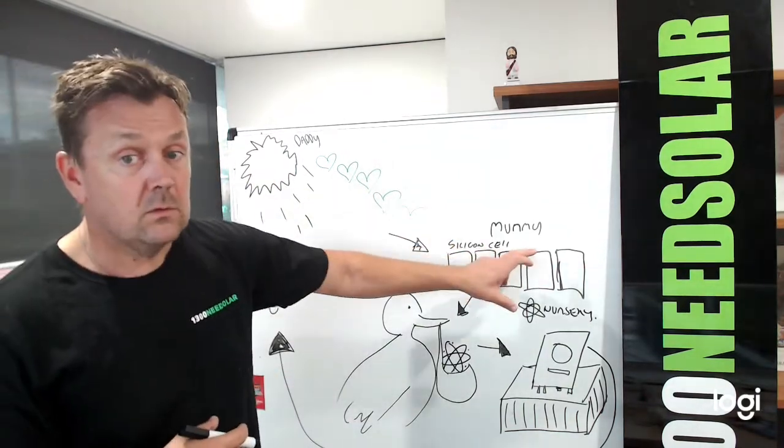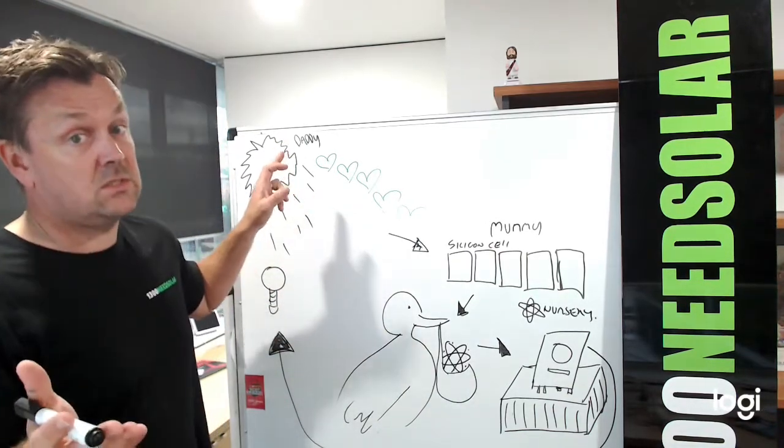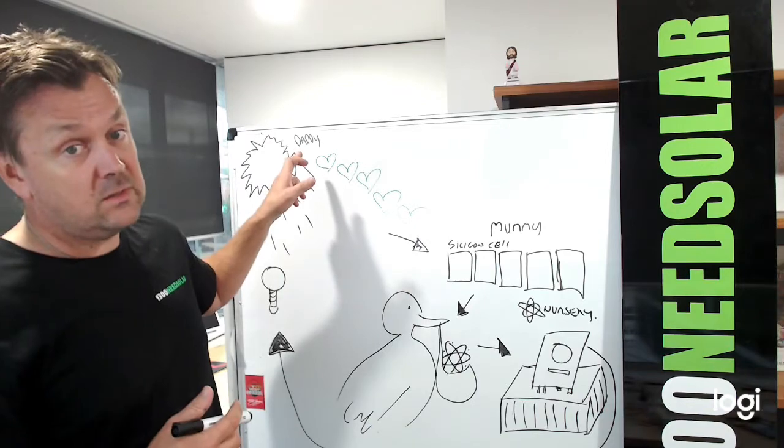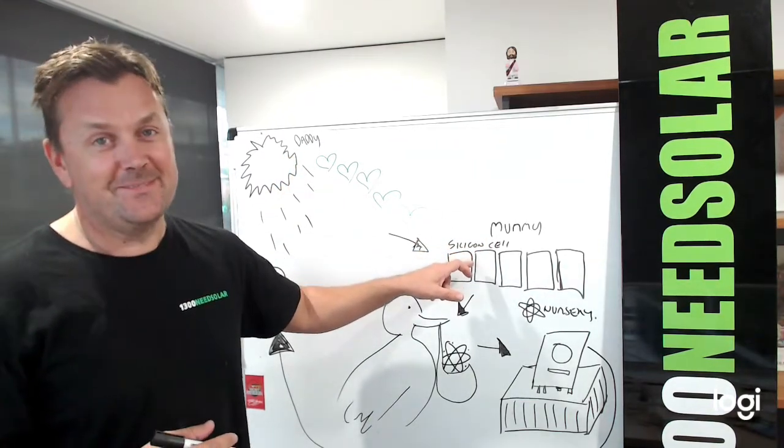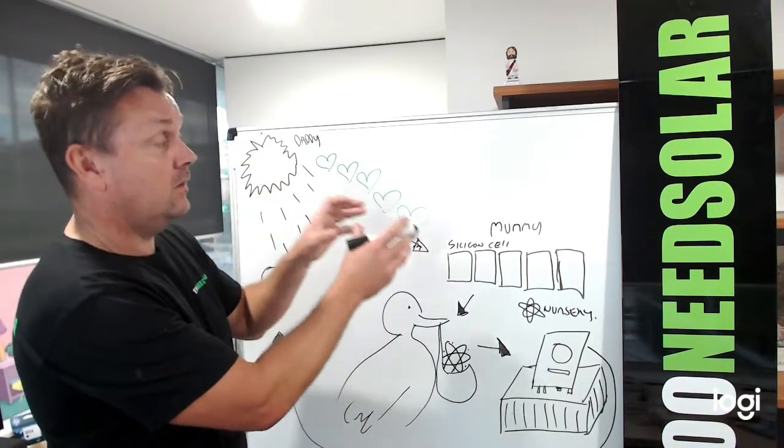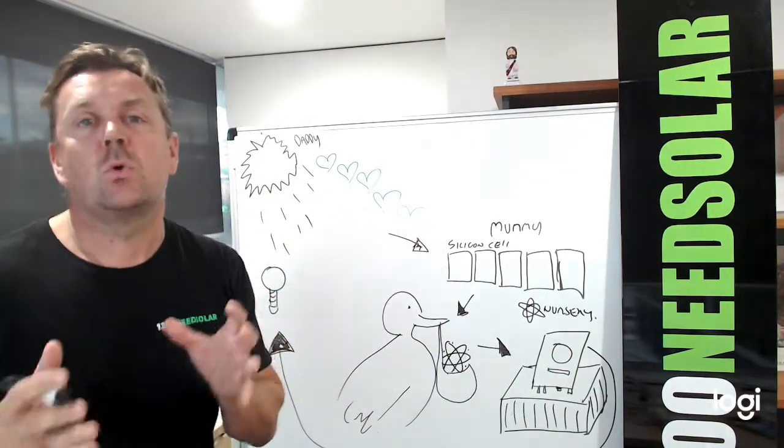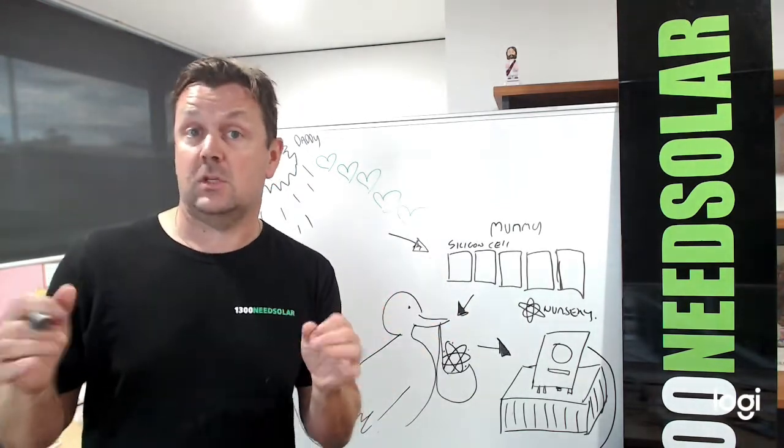And here is silicon cells. You know those little silicon cells. So for the purpose of the exercise today, kids, we're going to call the Sun the Daddy and the silicon cells the Mummy. Now the Sun or the Daddy and the silicon cells or the Mummy, well they fall in love. They're very attracted to each other.